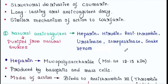Let's talk about natural anticoagulants, which are purified from natural sources. Examples of natural anticoagulants include heparin, hirudin, antithrombin, urokinase, streptokinase, snake venom, and others. Let's talk about them one by one.